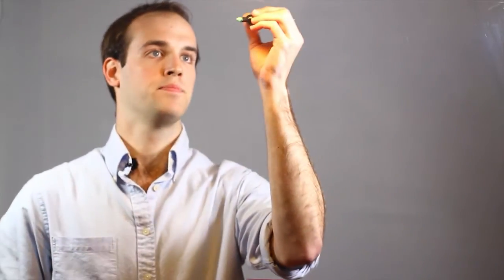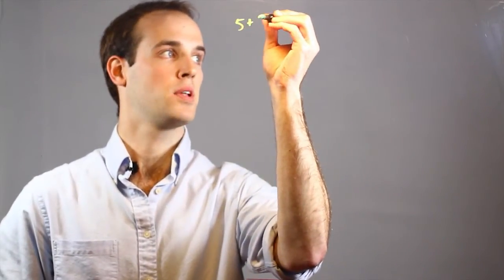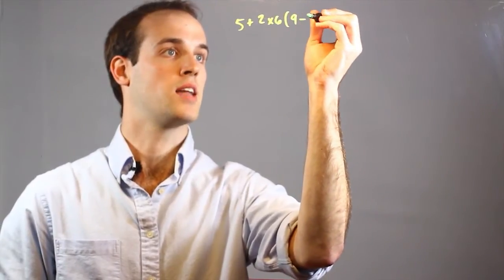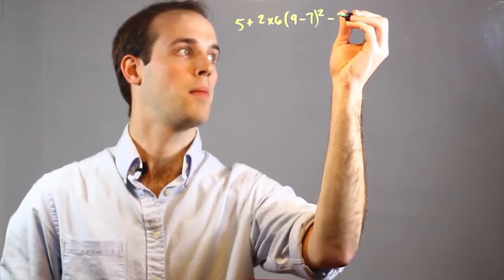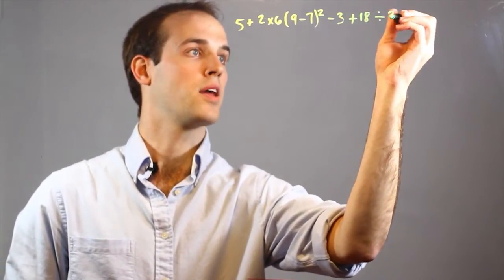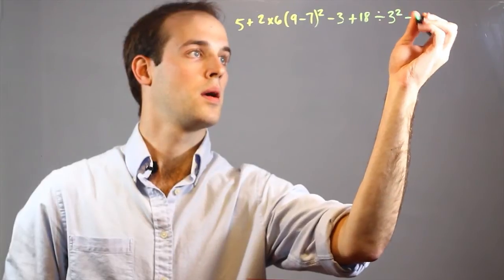So here we have our problem, which is 5 plus 2 times 6, parentheses 9 minus 7, squared, minus 3, plus 18, divided by 3 squared, minus 1.